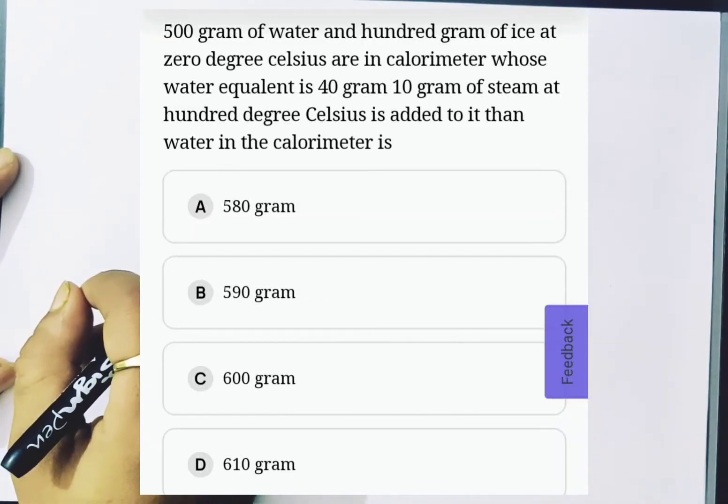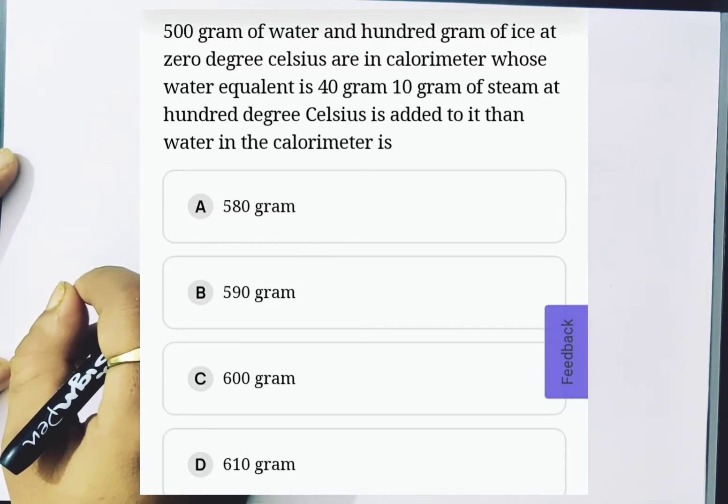500 grams of water and 100 grams of ice at 0 degree Celsius are in a calorimeter whose water equivalent is 40 grams. 10 grams of steam at 100 degree Celsius is added to it, then water in the calorimeter is...